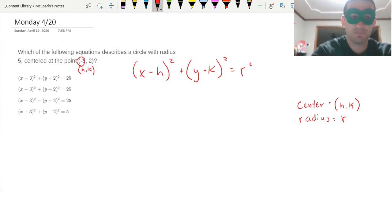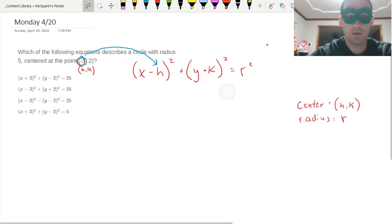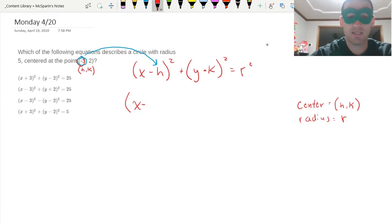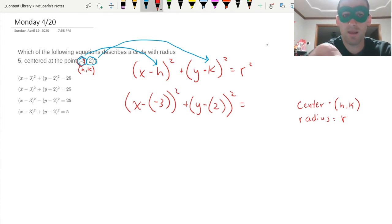That means that my h is negative 3, and I can just take and put it there. So let's rewrite that: X minus and instead of h I'm going to put in negative three squared. Then I'm going to take my k, which is actually 2, so I'm going to put it there. So now I've got Y minus and then I got to put it in parentheses 2 squared.